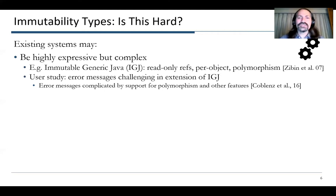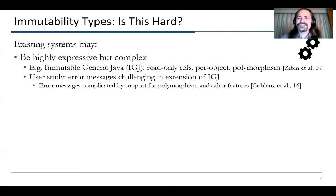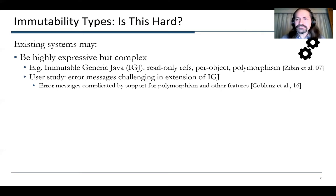We looked at some existing systems for enforcing immutability, especially in object-oriented languages. We find many systems that are very expressive, but also complex. We looked at Immutable Generic Java, for example — it has a rich set of features: read-only references per object, reasoning about immutability, polymorphism, so you can have immutable collections of mutable objects and mutable collections of immutable objects. We did a study using an extension of this to enforce transitive immutability, and we found the error messages were quite challenging, complicated by support for polymorphism and other features. So those features are good, but they make usability challenging.